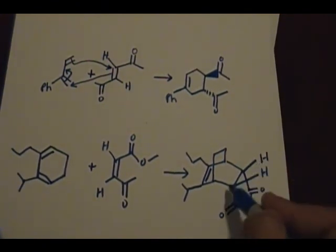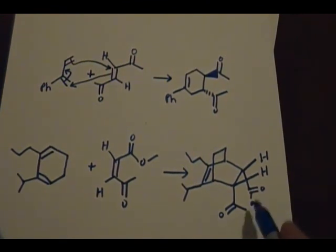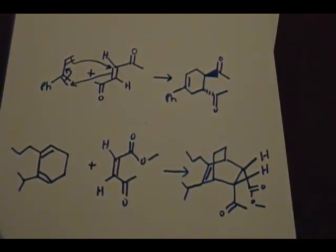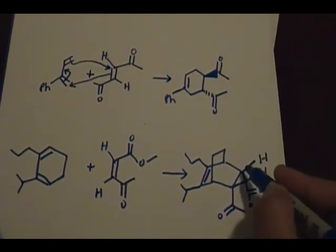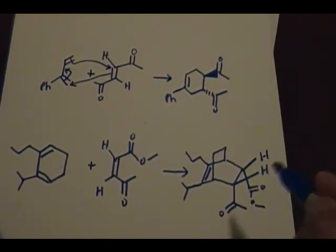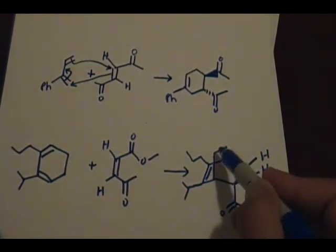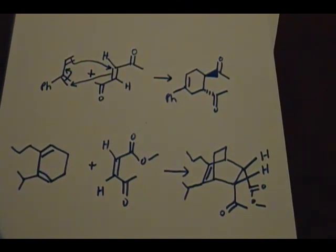So this exo position, where these hydrogens are at, these two, this ketone and this ester is in the endo position. In the exo position, the substituents, the big substituents, kind of interact with the bridge and it causes the strain. That's why you want to put them in the endo position because it's more favored, there's less stress.